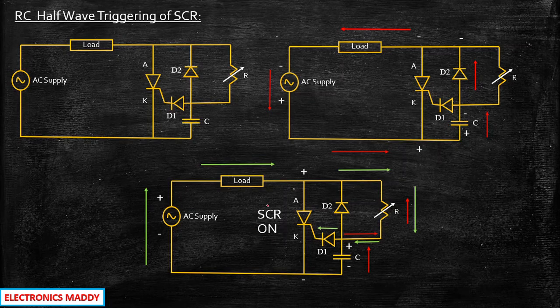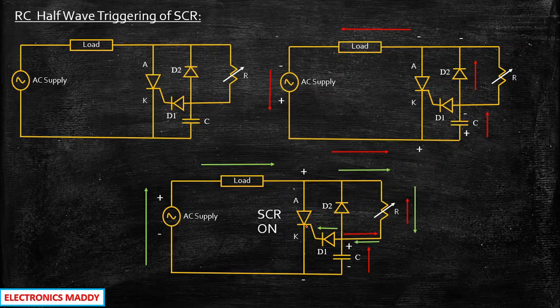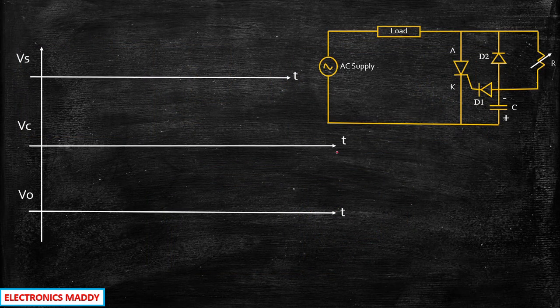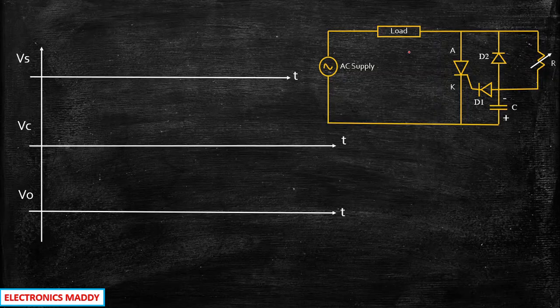The SCR is now turned on using this method. To understand how effectively we have done that, we will look at the waveforms and understand the advantage compared to the R triggering method. We will look at the supply waveform, the voltage across the capacitor, and the overall output voltage at the load terminals. This will give us a clear understanding of the operation with respect to the firing angle of this circuit.